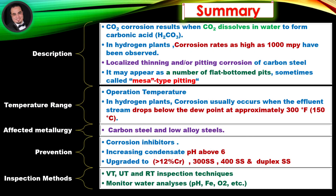Summary — Description: CO2 corrosion results when CO2 dissolves in water to form carbonic acid. In hydrogen plants, corrosion rates as high as 1000 mils per year have been observed. Localized thinning and/or pitting corrosion of carbon steel may appear as flat-bottomed pits, sometimes called Mesa-type pitting. In hydrogen plants, corrosion usually occurs when the effluent stream drops below the dew point at approximately 300°F.